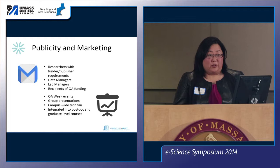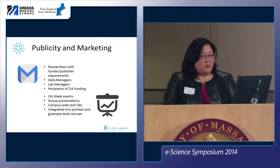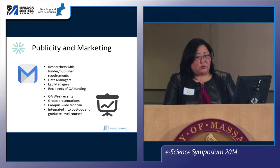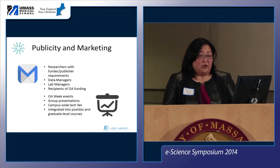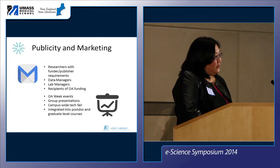Faculty told us that even though it's not particularly effective, email is still a really good way to get a hold of them — I love it, it's like, it's not effective, but use it anyway. So we did a lot of targeted email blasts. We looked at researchers who had either funding or publishing requirements — people publishing in PLOS, Science, and Nature who have data sharing requirements, and people with NIH grants over $500,000 a year in funding — about 400 people total. We also sent to a list of data and lab managers, since they're actually handling the data. We emailed about half of the roughly 30 people who received our open access fund, thinking that if they're interested in open access, they may be interested in open data.